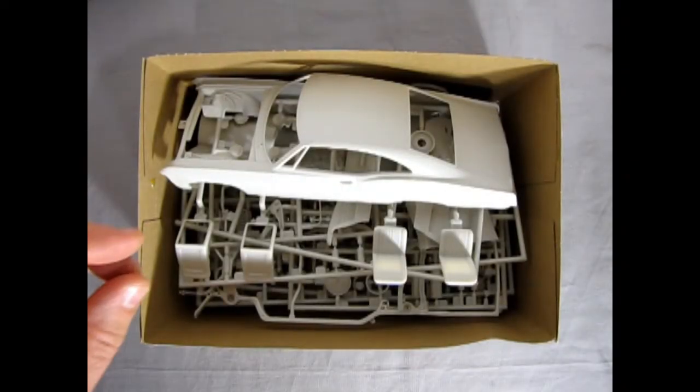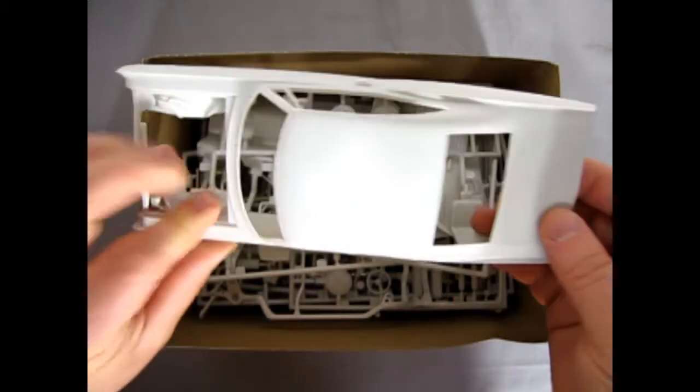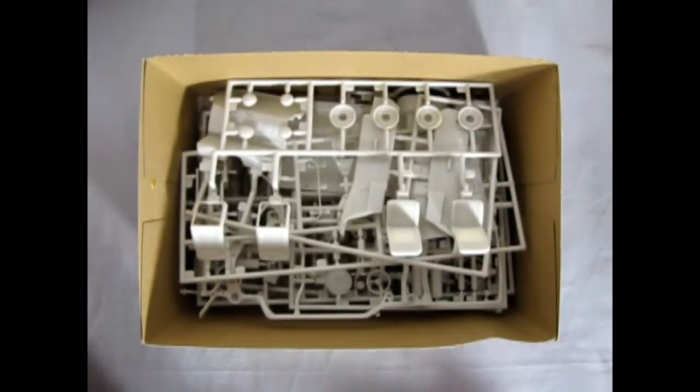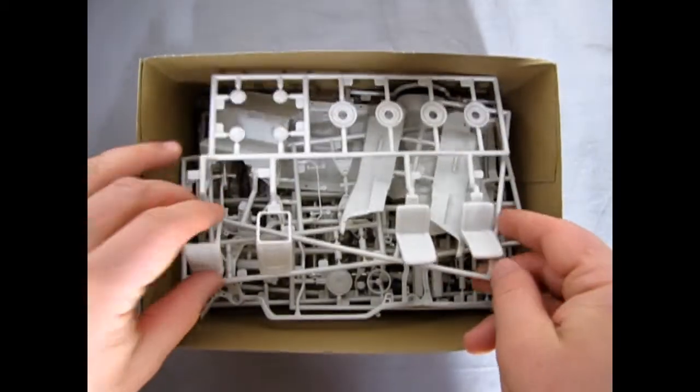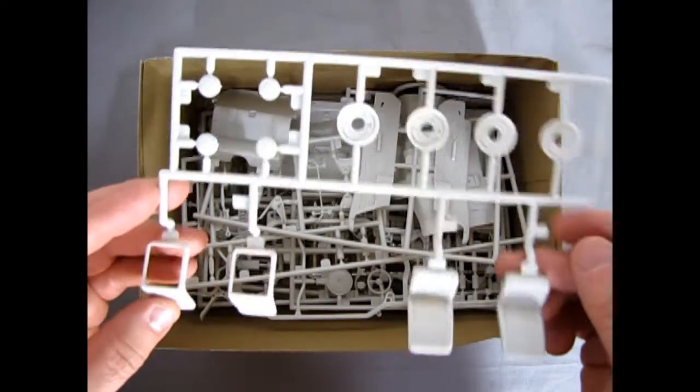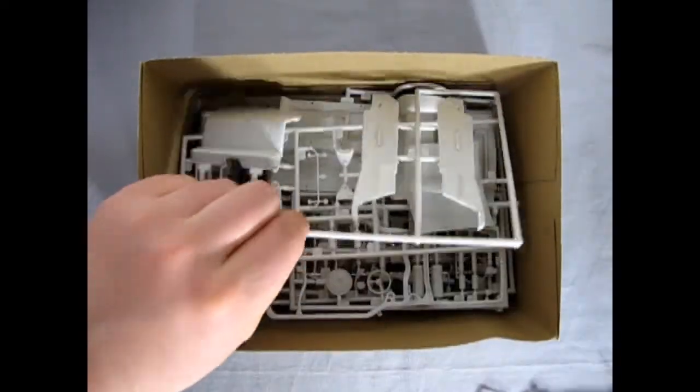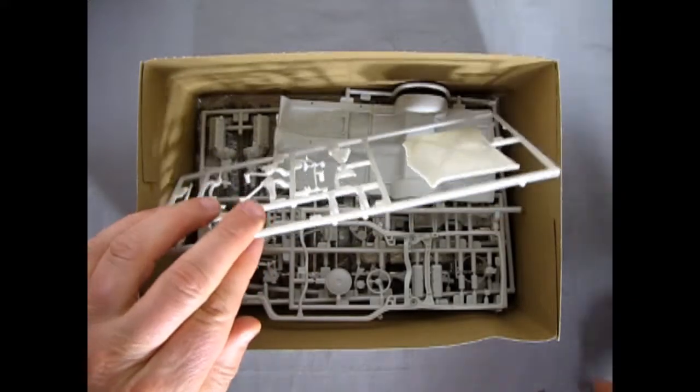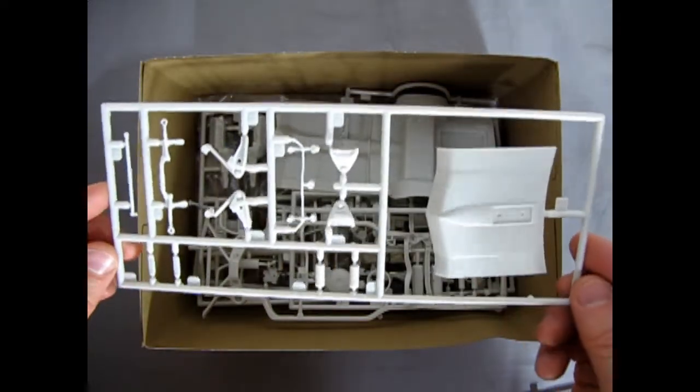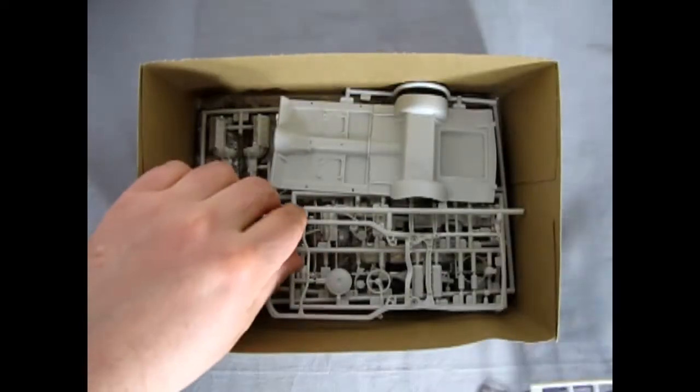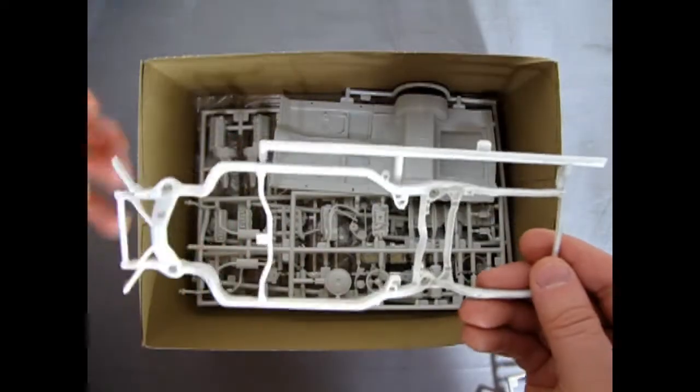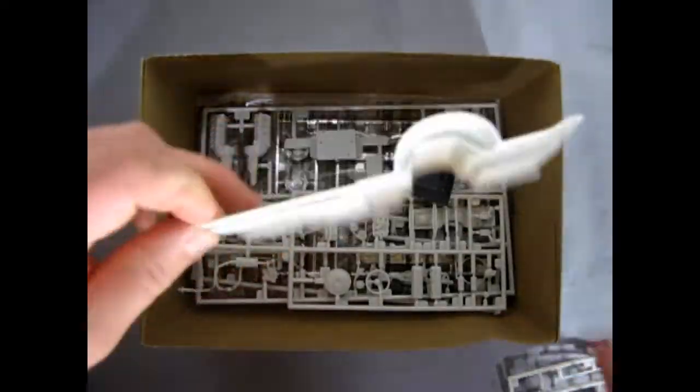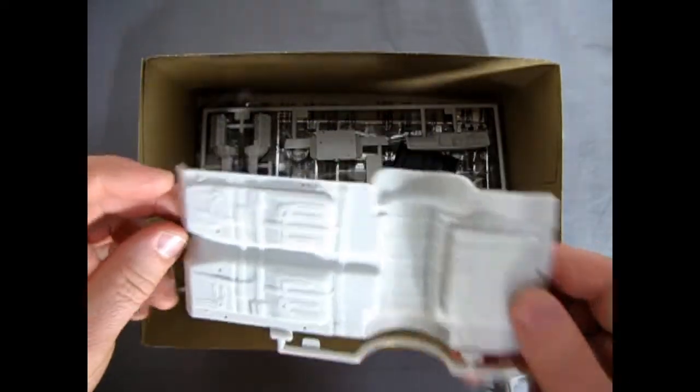There's our body in the box, nice detailing on it. We'll take a look at that in a minute. Interior components, separate molded body sides for the interior, door panels, the hood and ARs. Then we got our frame here, pardon me, and our under chassis.